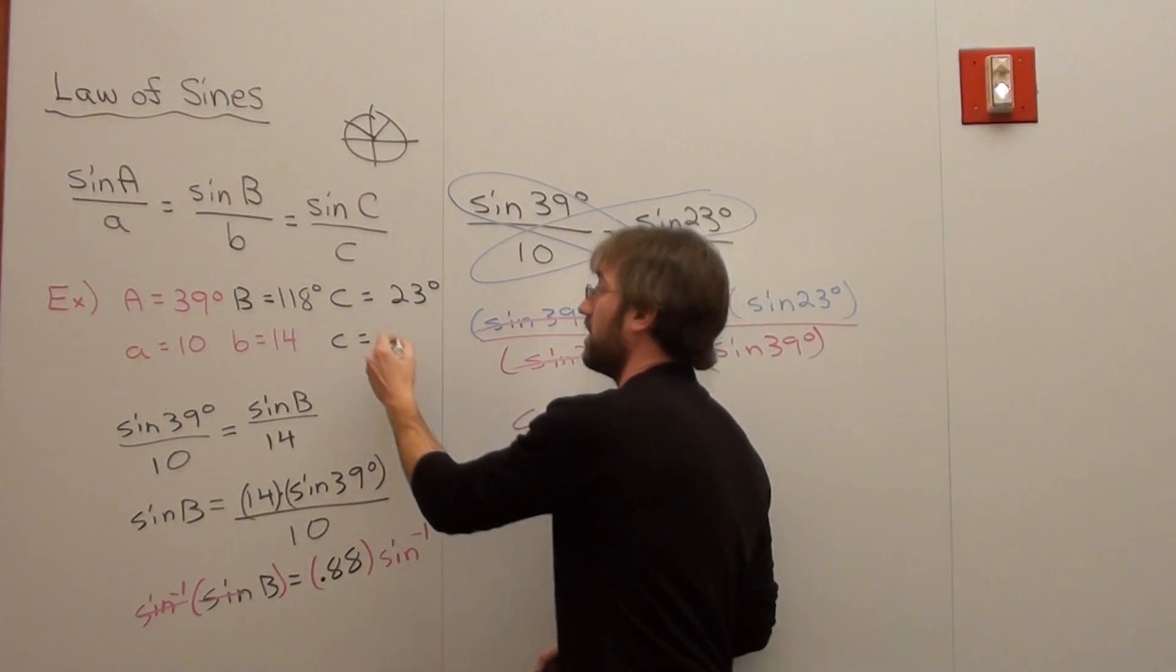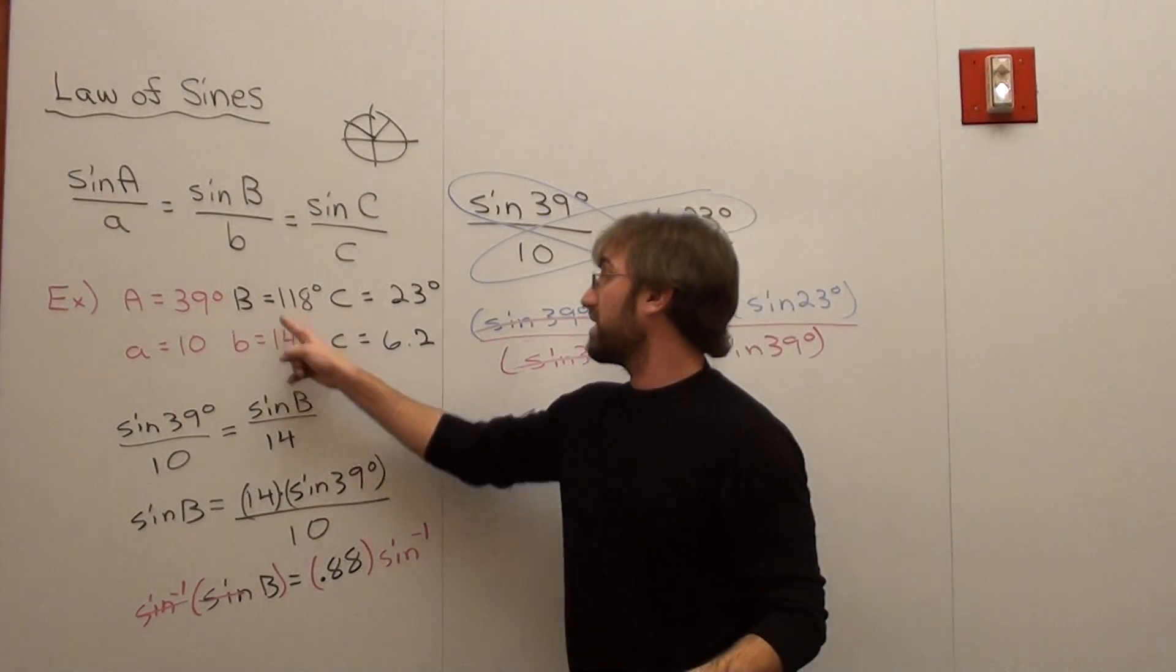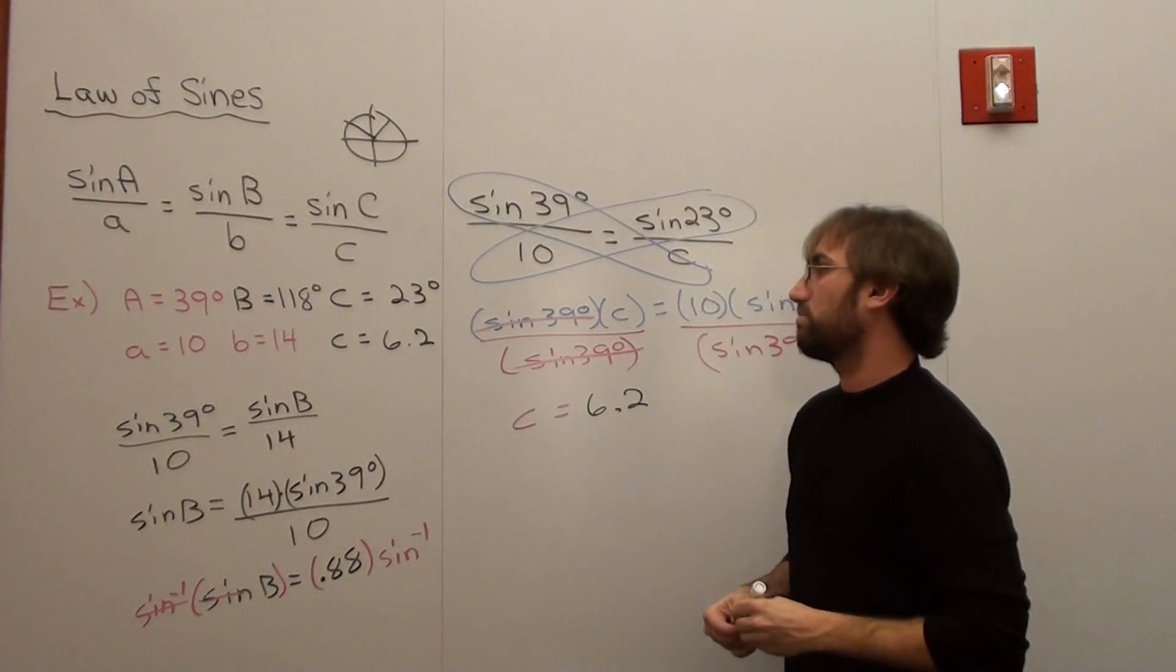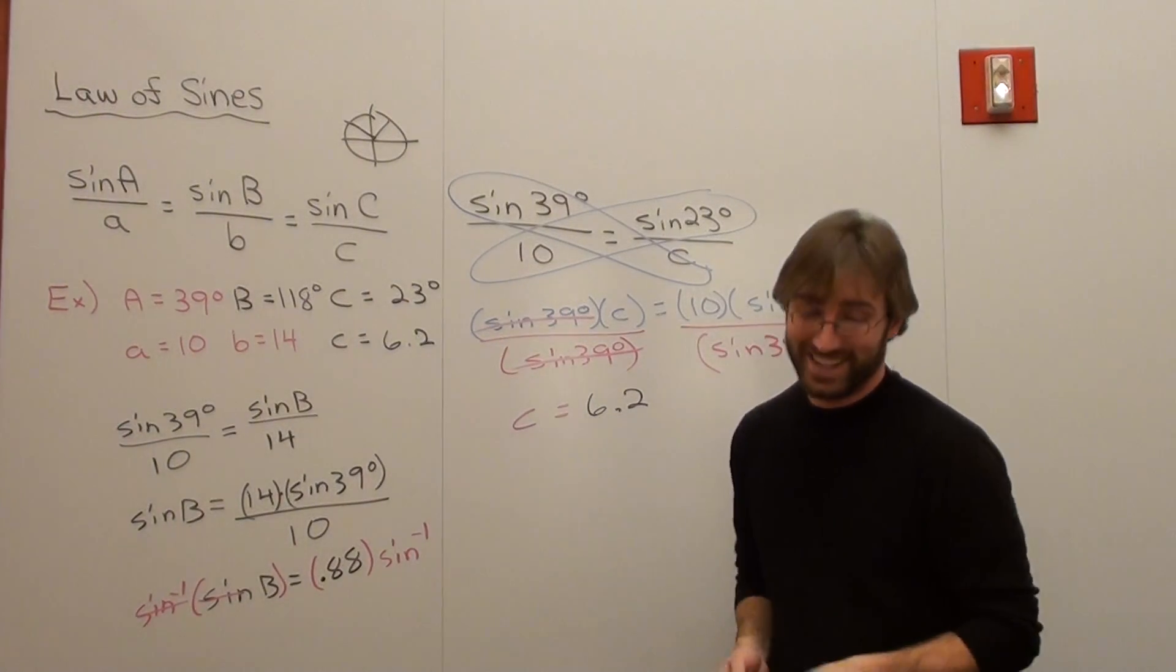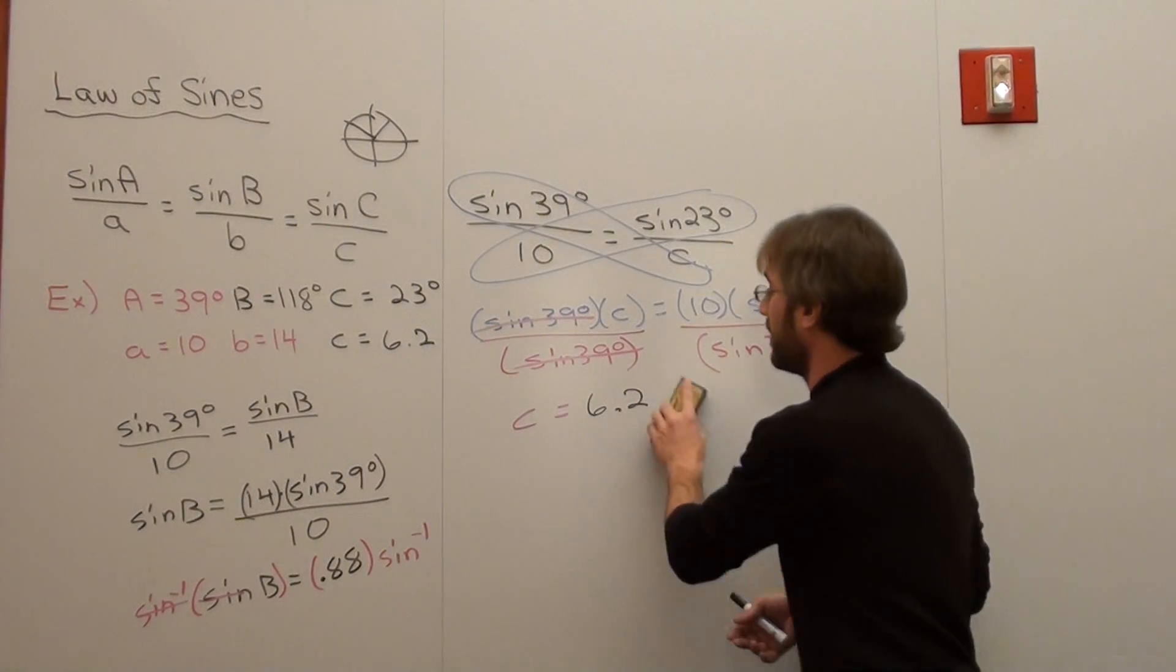The story does check out here too. Smallest angle should have the smallest side, biggest angle should have the biggest side. As you can see, I've got two different scenarios here.